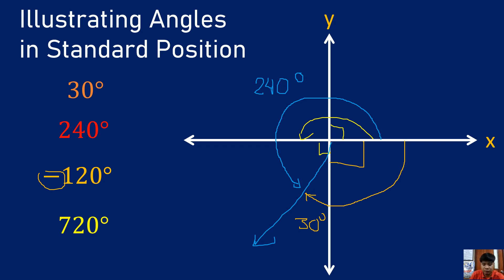What about 720 degrees? 720 degrees is more than 360 degrees, and we know that 360 degrees is one complete revolution. So how many revolutions does a 720 degree angle have? We have two revolutions — 360 degrees times two. This is already 360 degrees; I rotate again, one more revolution. So this illustrates a 720 degree angle measure.